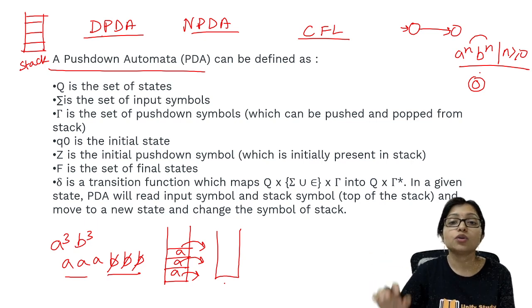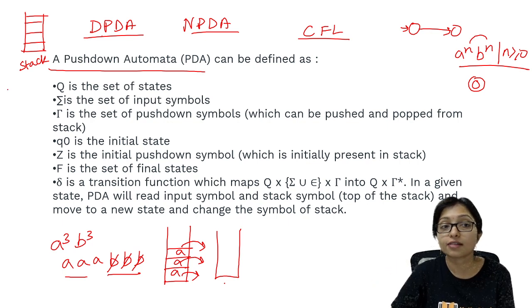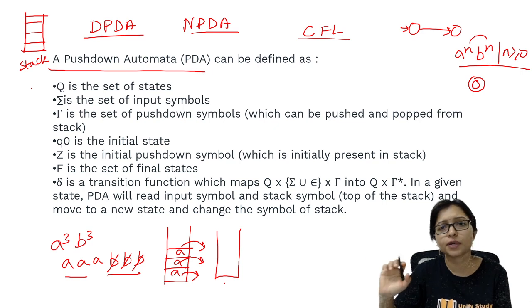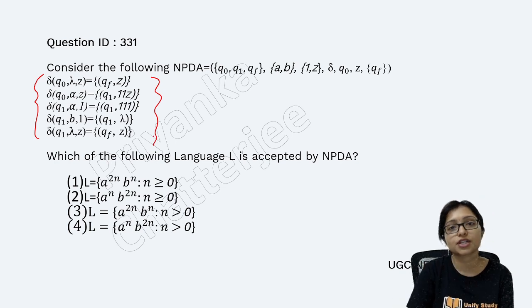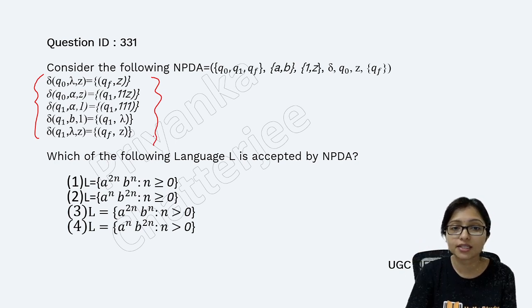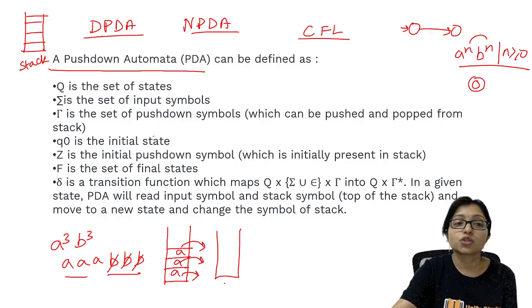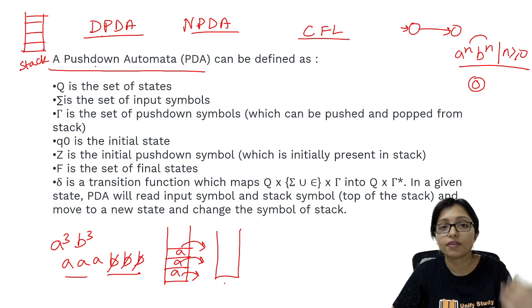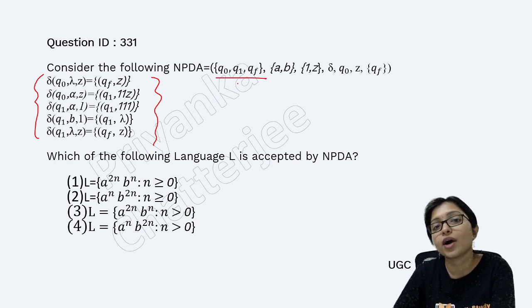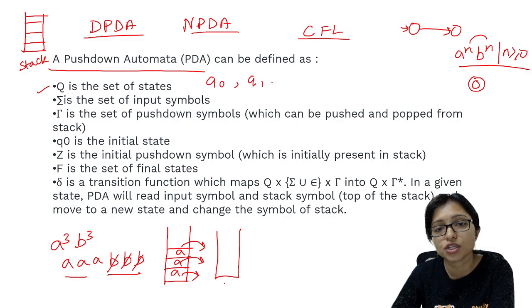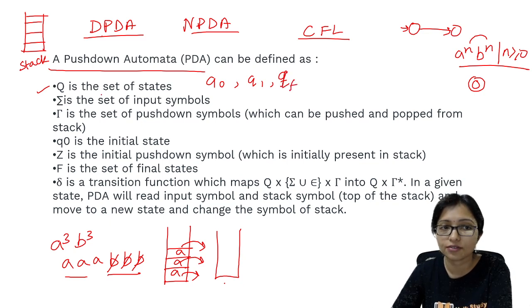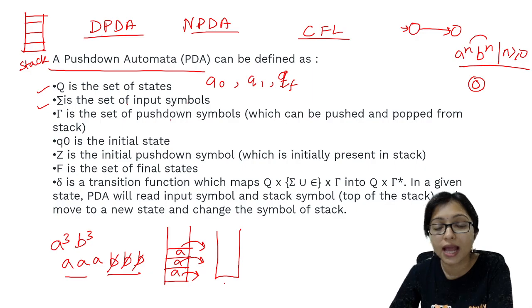The problem is that here I have to work on a stack, whereas in finite automata there is no stack. So the transition function is how to write it — that is actually the problem, because in this question the transition functions are given. If you are not able to understand the transition function, you will not be able to do the question. So first of all, how to define a PDA: Q is the number of states. In this question q0, q1, qf — these are the three states given.